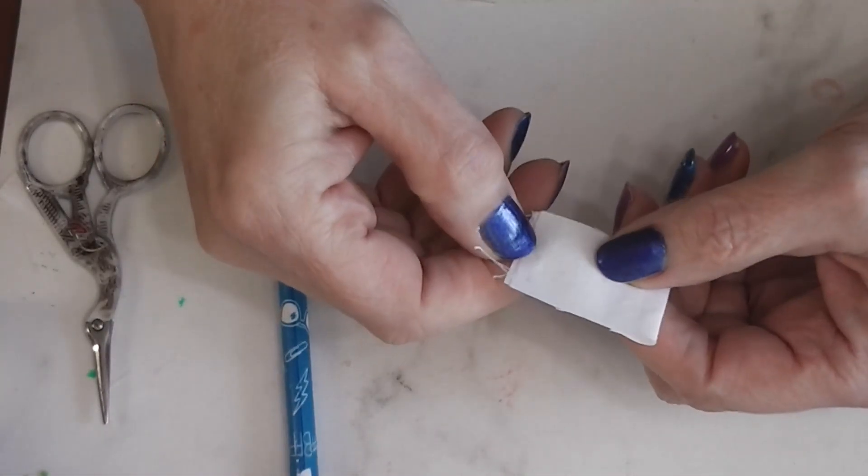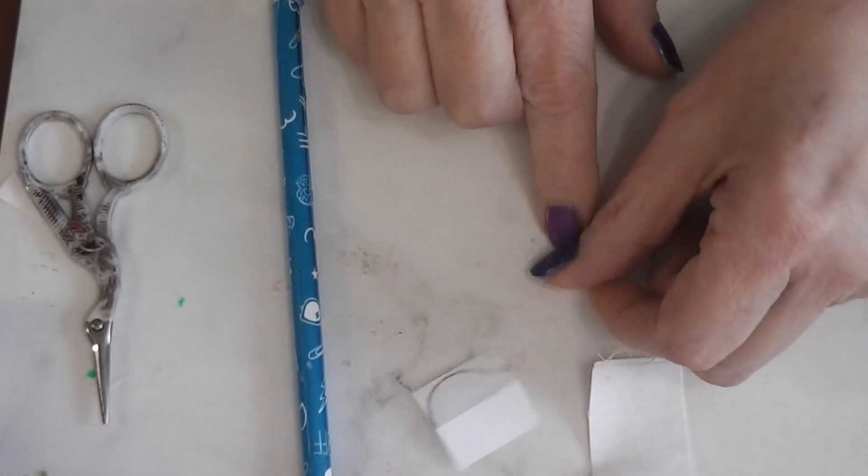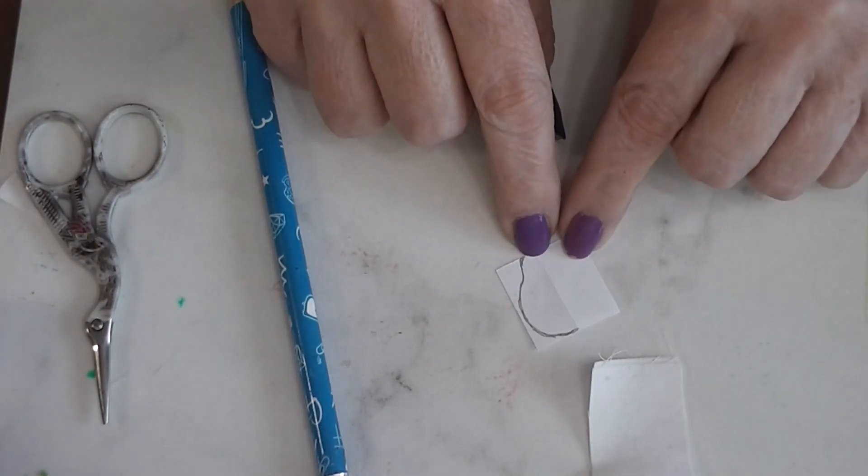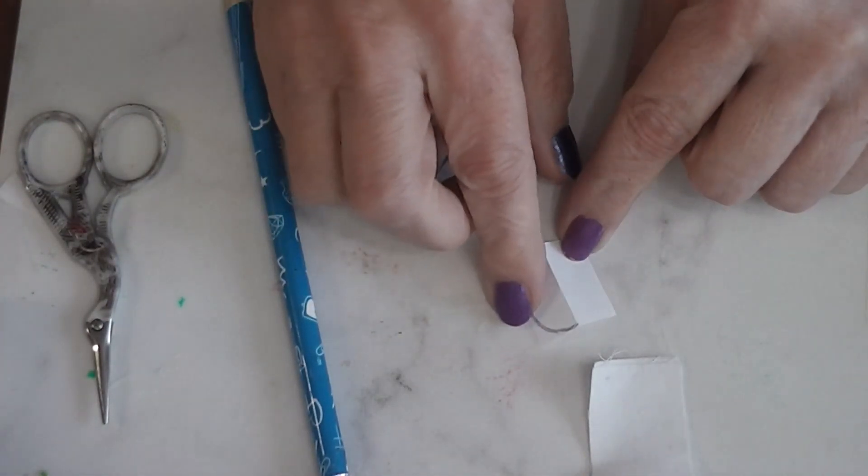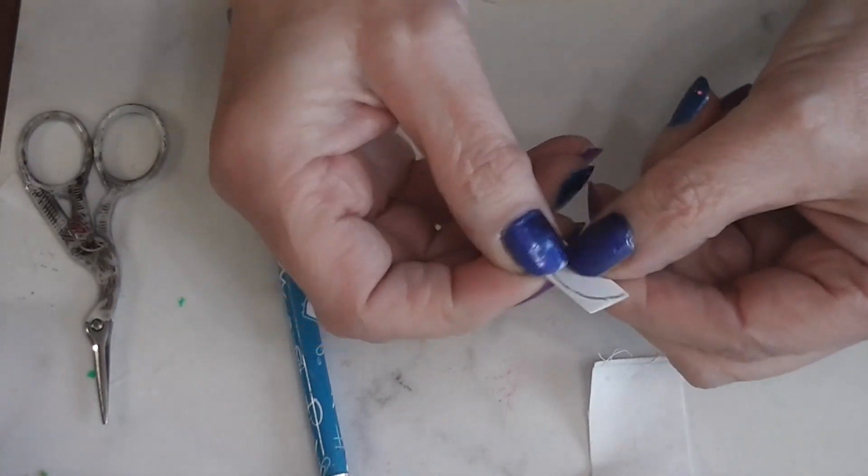This is pressed and ready to go. Don't worry about any threads hanging off at this point. On this piece of paper I cut myself a 1 inch square of just printer paper, lightweight paper. And I drew half of a strawberry shape. I fold it in half and do a half strawberry.